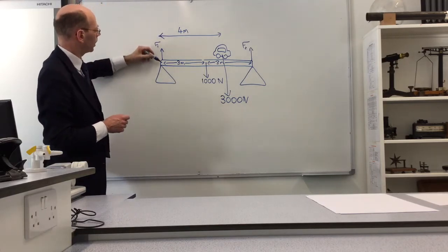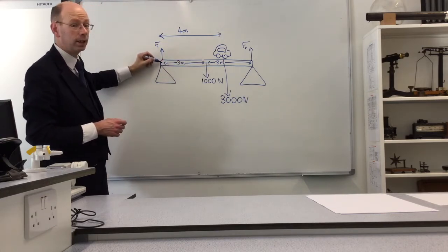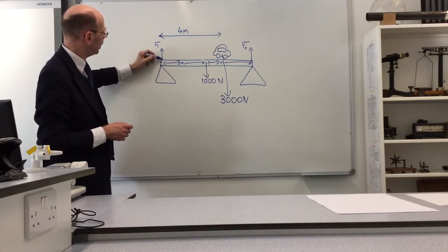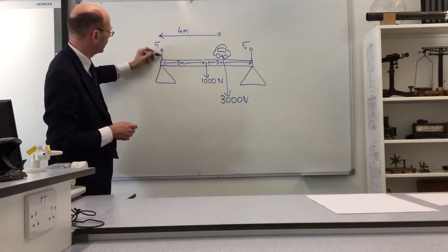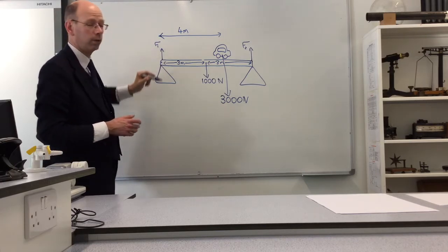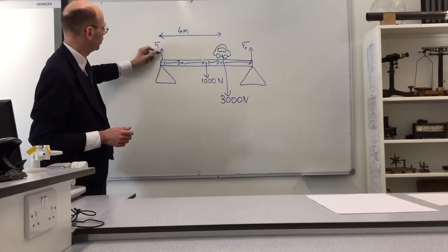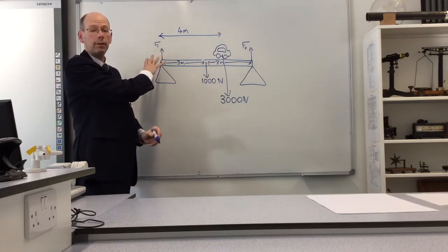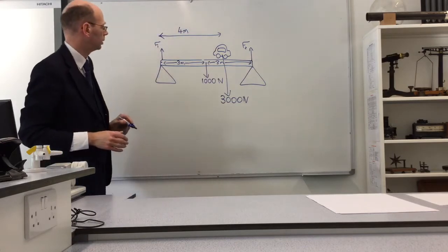The reason we're going to put our pivot here, rather than in the middle, is because it's a handy little trick. If we make the pivot here, then this force disappears from the equations. And the reason it disappears is because the moment is force times distance. And this force now is at zero distance from our pivot. So, we're handily going to be able to forget all about F1 and just use a little bit of math to work out F2.